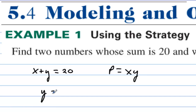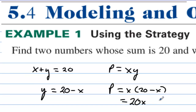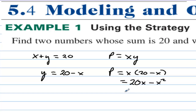We can do that by subtracting x, giving us y equals 20 minus x. Then substituting y with 20 minus x in the product, we have the product is x times (20 minus x), which equals 20x minus x squared. Then the derivative of the product is 20 minus 2x.